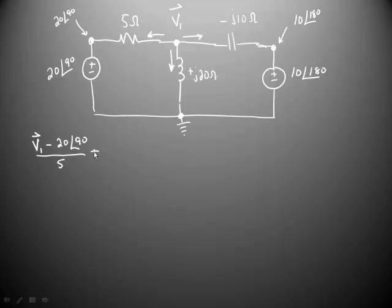Plus the current coming out of the J20 ohm resistor, plus the voltage where we're at, V1 Phasor minus the voltage on the other side, which is zero, divided by the impedance in between, plus J20.